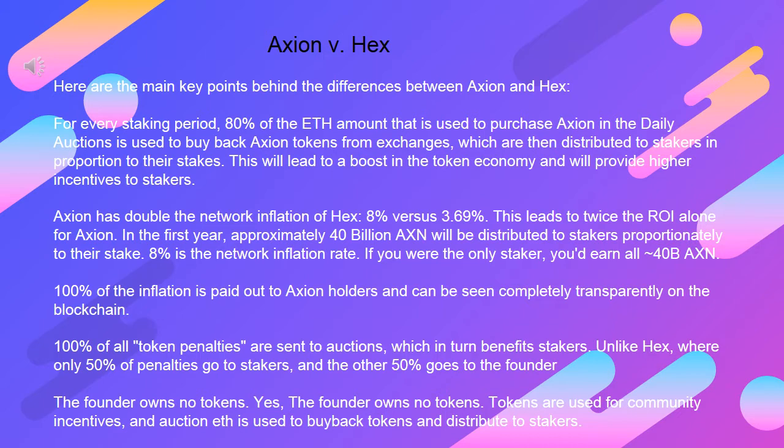8% is the network inflation rate. If you were the only staker, you'd earn all 40 billion AXN. 100% of the inflation is paid out to Axion holders and can be seen completely transparently on the blockchain. 100% of all token penalties are sent to auctions, which in turn benefits stakers. Unlike HEX, where only 50% of penalties go to stakers and the other 50% goes to the founder.